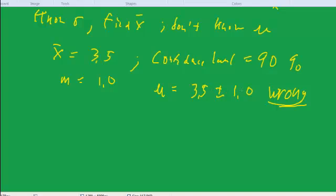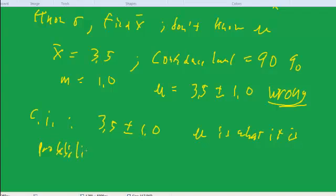So that's not the way we describe the confidence interval. We will say that our confidence interval is 3.5 plus or minus 1.0. But the way we put it in words is as follows. Different people word it differently, but the way I like to word it is this. mu, remember mu is what it is. And we make probability statements about our statistics, about our sample statistics.